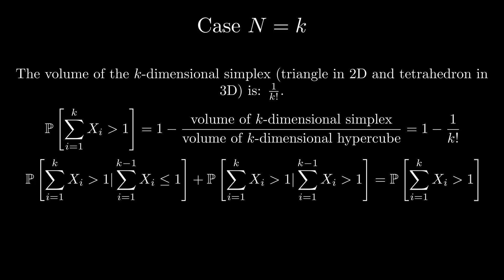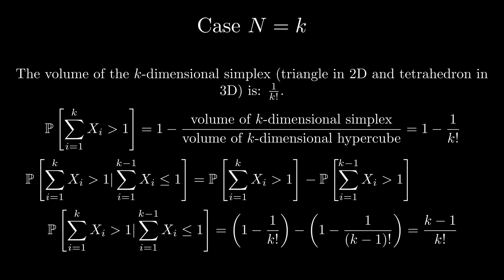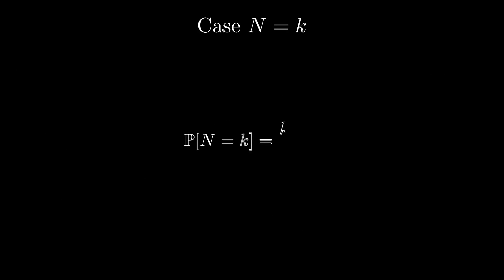We again use the law of total probability to get the following expression. And if the sum of the first k minus 1 variables exceeds 1, then the sum of the first k variables must of course exceed 1, so we can simplify the middle term. It becomes the probability that the sum of the first k minus 1 variables exceeds 1. Finally, we get the probability of big N equals k is k minus 1 over k factorial.